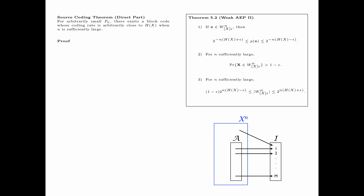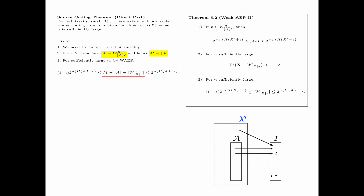We now prove the direct part of the source coding theorem. The main idea is to choose the set A suitably. Fix epsilon greater than 0 and take the set A to be the set of all typical sequences, W(x, epsilon, n), and hence m, the size of the index set, is equal to the size of A. Then for sufficiently large n, we have m = |A| = |typical set|, lower bounded by (1 - epsilon) * 2^(n(H(x) - epsilon)), and upper bounded by 2^(n(H(x) + epsilon)).